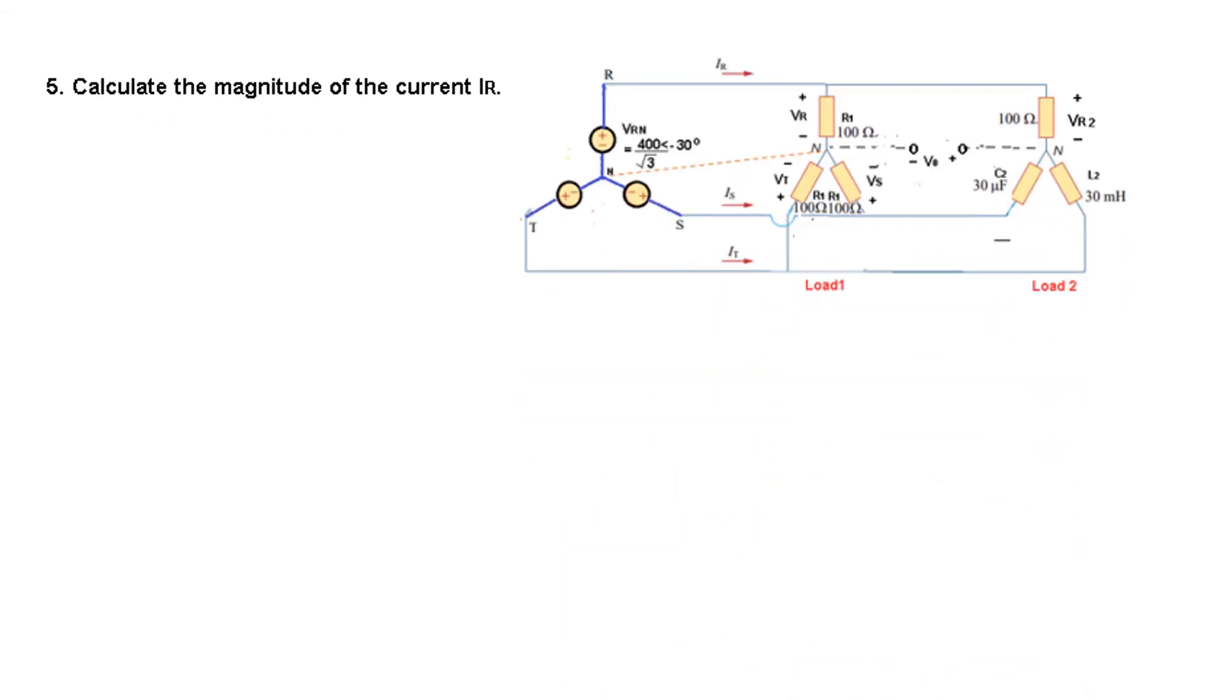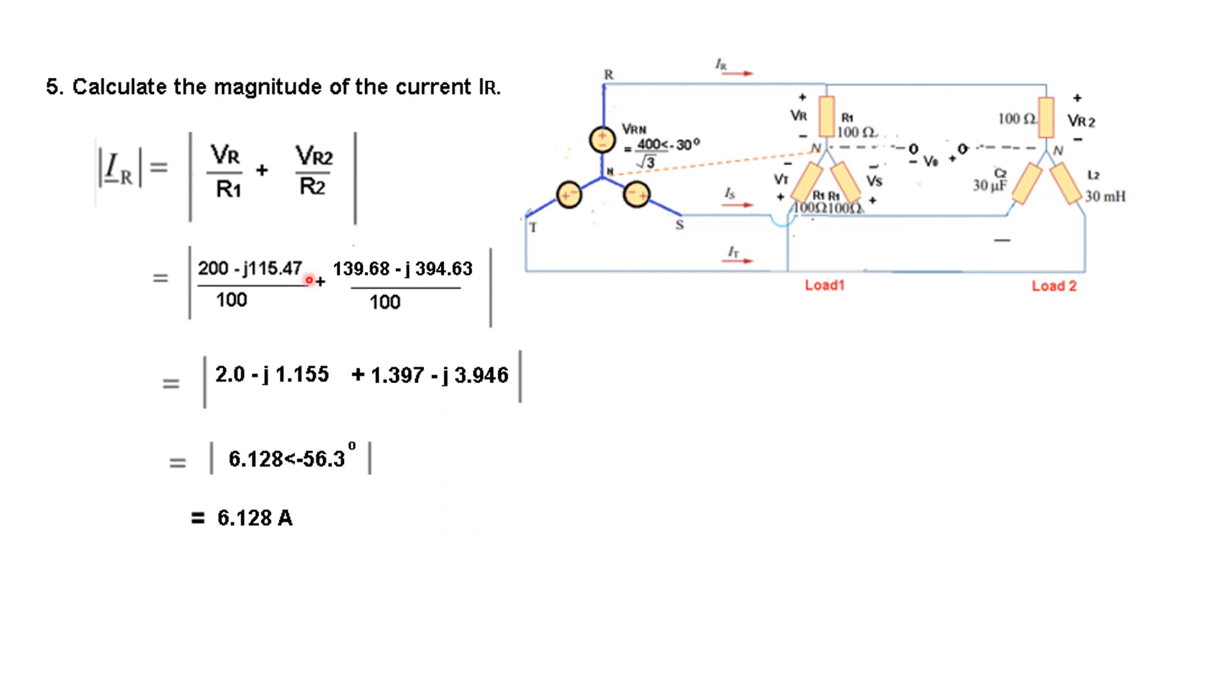Finally, we need to calculate current IR, which is the sum of the current through R1 and R2. This we can calculate from VR/R1 and VR2/R2. We know all these values—we calculated VR and VR2. Plugging in the values, the answer is 6.128 amperes. I hope you have been able to follow this and can solve similar problems using this technique. Thank you.